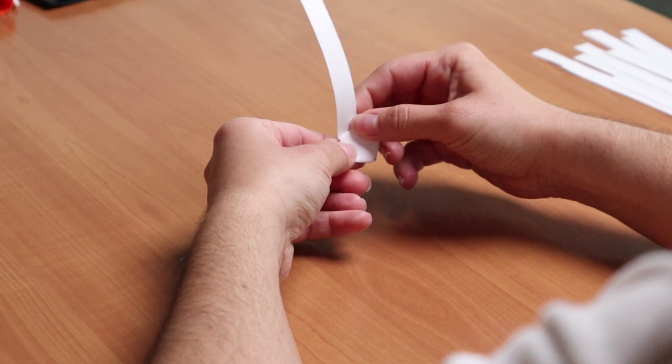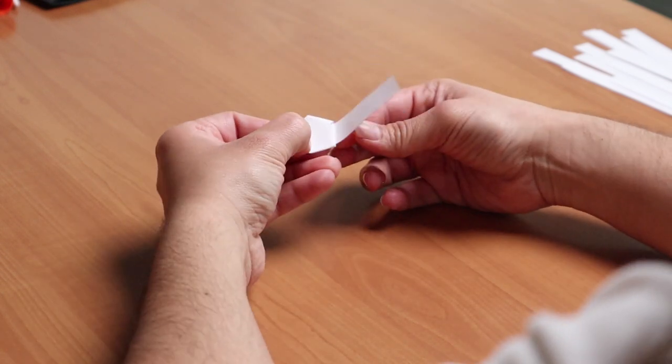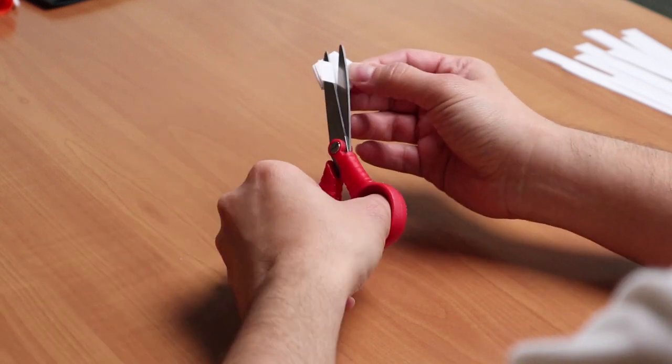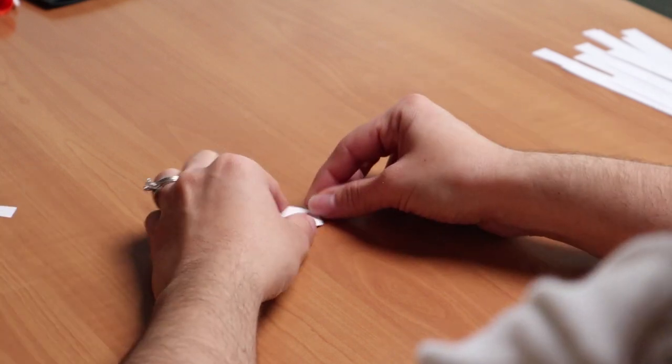Step five, keep wrapping until you get to the end of the strip. Tuck the last bit of the strip into the pouch. If the end is too long, you can cut a bit off.